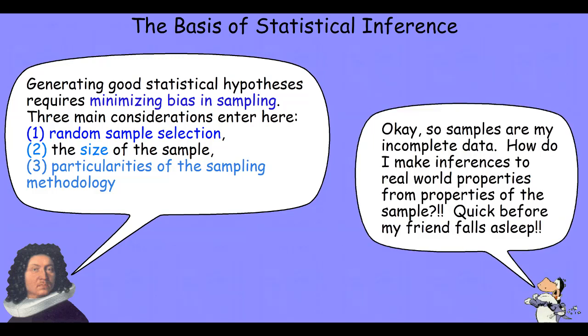So, our samples are our incomplete data. Now we want to think about how it is that we can make inferences to real-world properties from that sample. But before we do that, I want to spend a little bit of time talking about an example of the difficulties, even with trained scientists, in generating methodologically unbiased samples.